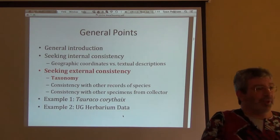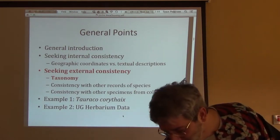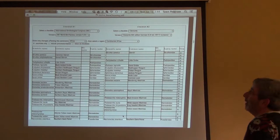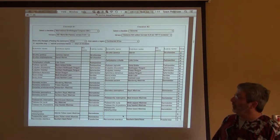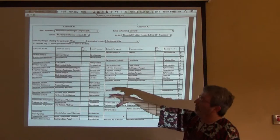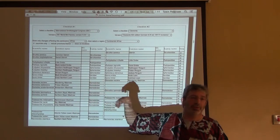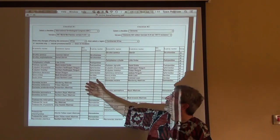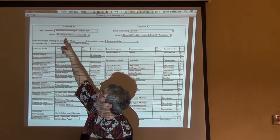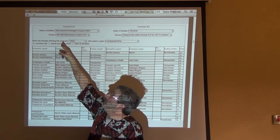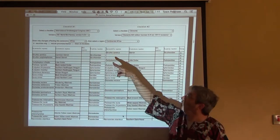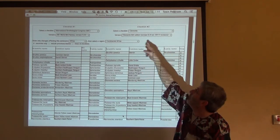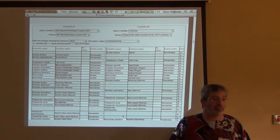On the external side, we have a lot more resources. This is something Arturo will talk with you about, but this is just an illustration where we can look at external sources. Here are two different authorities: the International Ornithological Congress World Bird Names version 3.05 versus Clements, 6th edition.